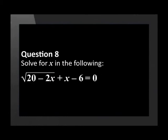Question 8. Solve for x in the following: the square root of 20 minus 2x, plus x minus 6, is equal to 0.